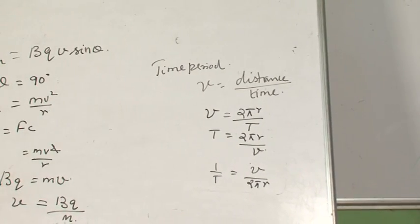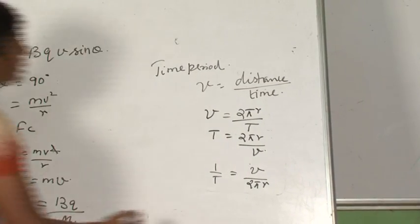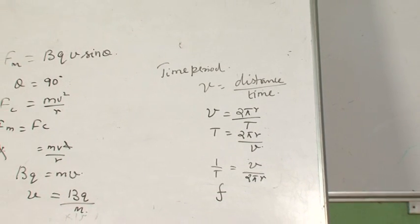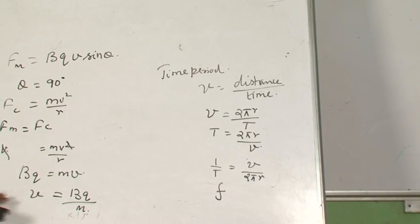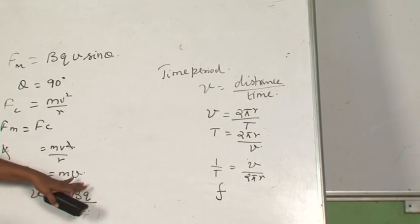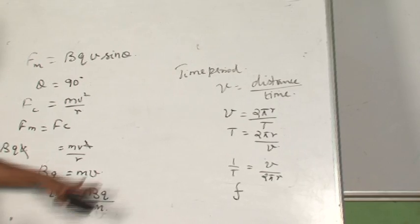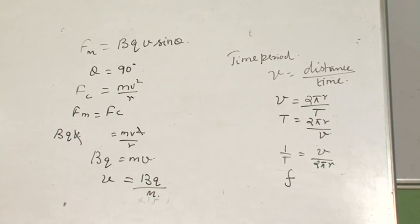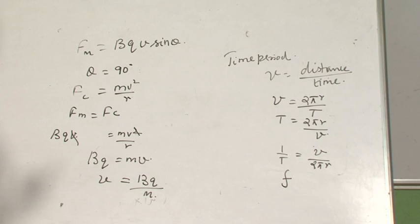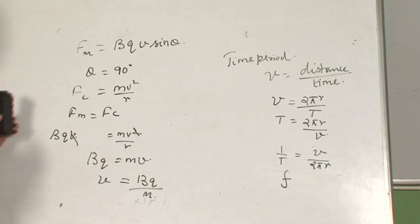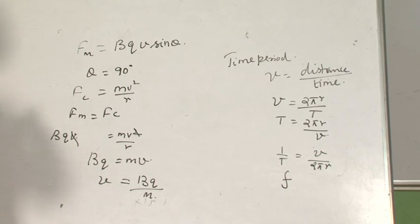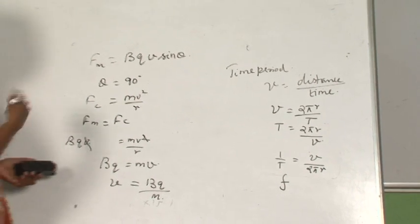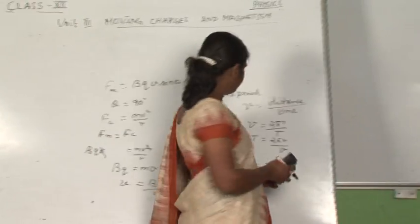Since 1 by T is frequency and V equals BQ by M, substituting gives the frequency of one complete circular revolution. Frequency is the number of oscillations per second.